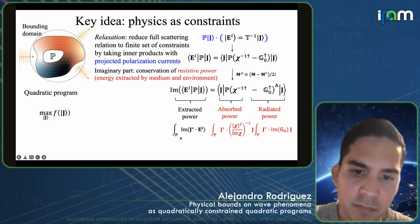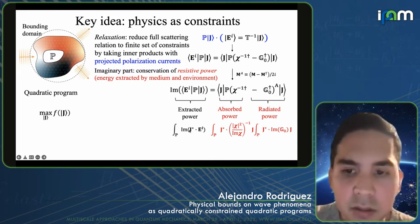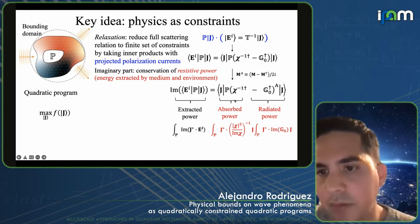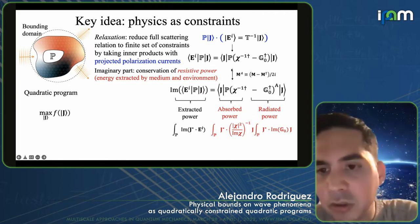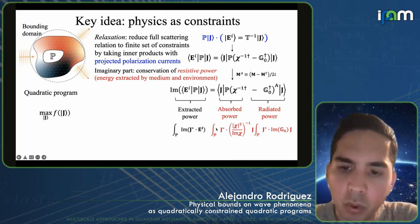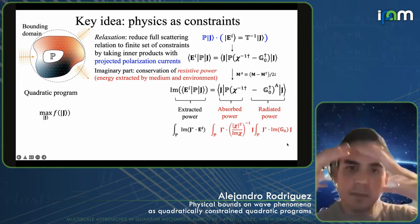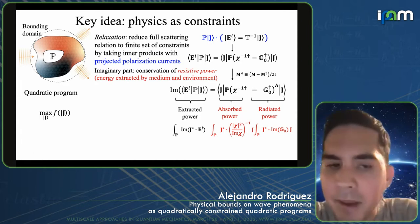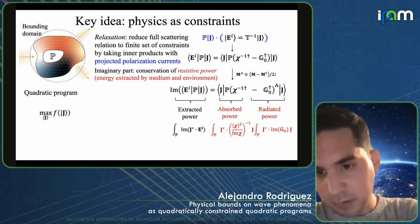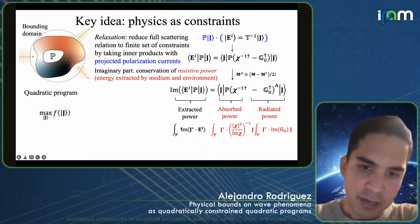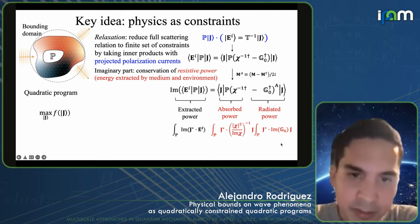On the right-hand side, you can interpret these quantities as the power absorbed in the medium and the power radiated or lost to radiation outside of the domain. This is basically just conservation of power — Poynting's theorem — telling you that whatever extracted power you're getting from the source has to go either into absorption and material dissipation, or into radiation.